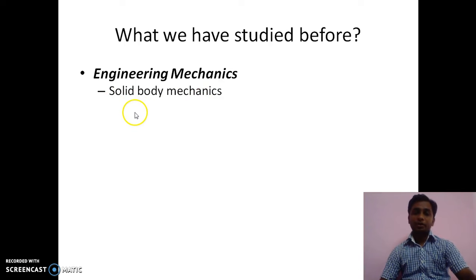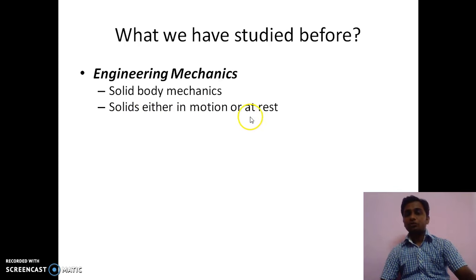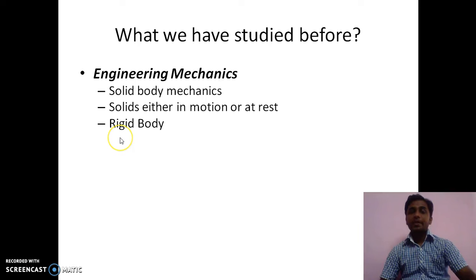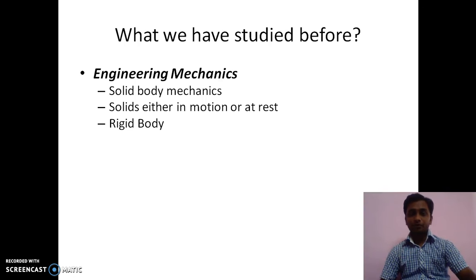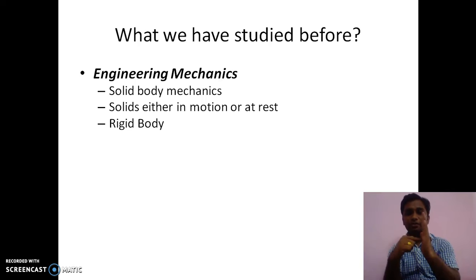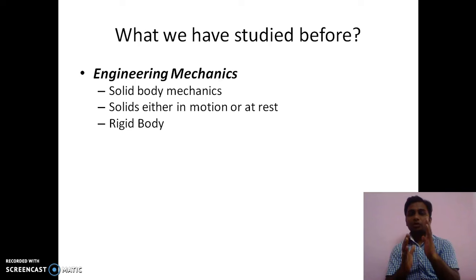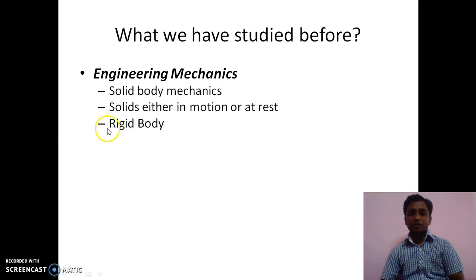In engineering mechanics, one important assumption is that bodies are rigid in nature. Rigid bodies are those which do not undergo deformation under the application of force — an imaginary concept where, even when force is applied, the body will not change its shape or size. Shape and size both remain the same; there is no deformation. By assuming different bodies are rigid, we analyzed those systems, and this is known as engineering mechanics.